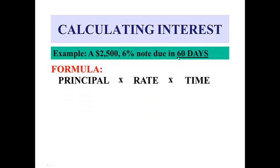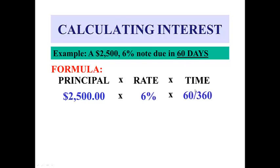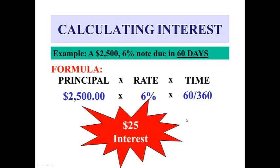Sometimes the term is listed in days, so we keep our time in days in our calculation. The principal of $2,500 at a rate of 6% times 60 days divided by 360. This is just 365 rounded — a procedure that a lot of banks use; they round the number of days in the year to 360. So the interest in this situation is $25.